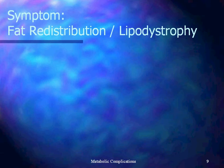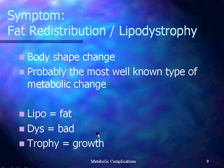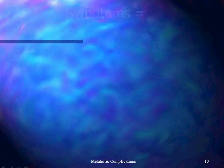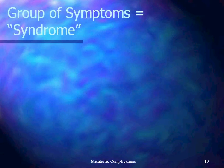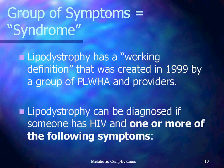One of the most highly noticeable symptoms of metabolic changes in people living with HIV is fat redistribution, or lipodystrophy — basically a body shape change. Going to the root words: lipo means fat, dys means bad, and trophy equals growth, so lipodystrophy is 'bad fat growth.' Lipodystrophy is actually a syndrome, because it's not a single symptom but a group of symptoms. This is the working definition created around lipodystrophy in 1999, and it's pretty well stood the test of time.